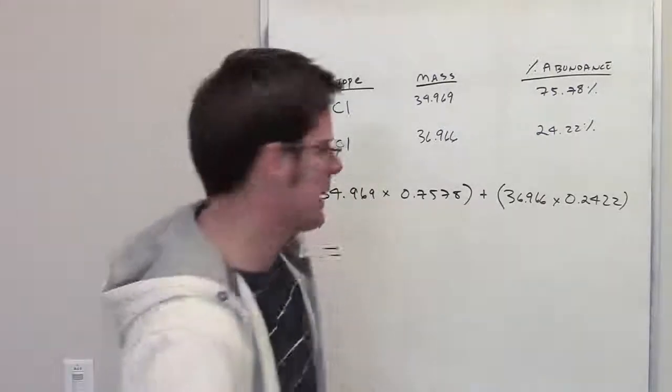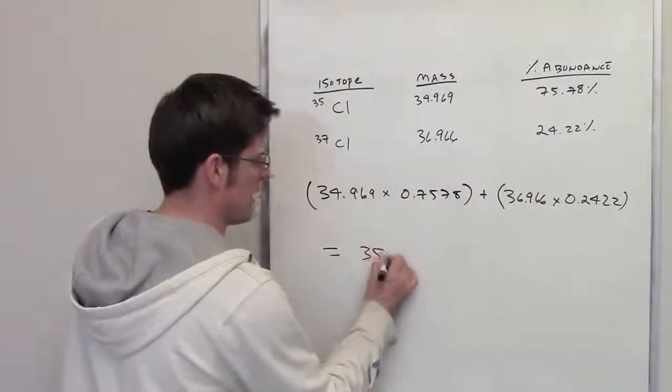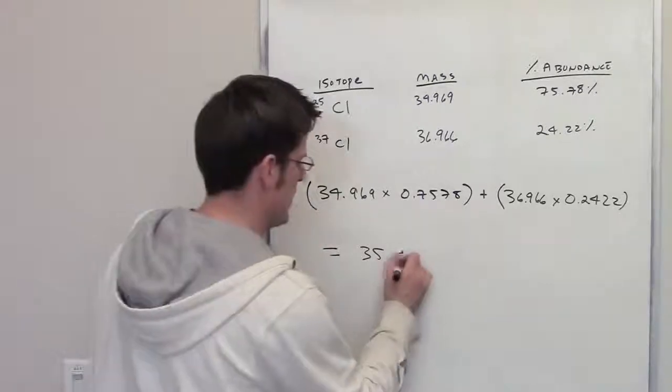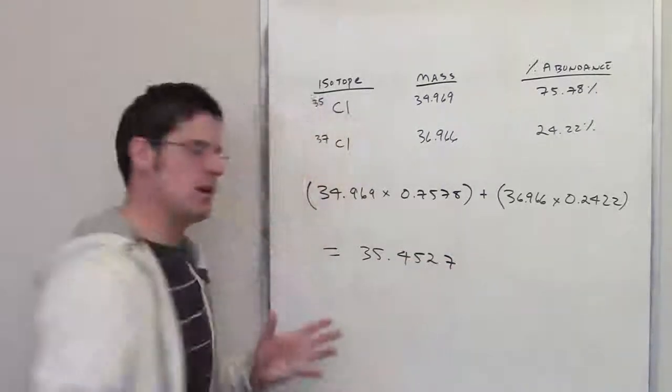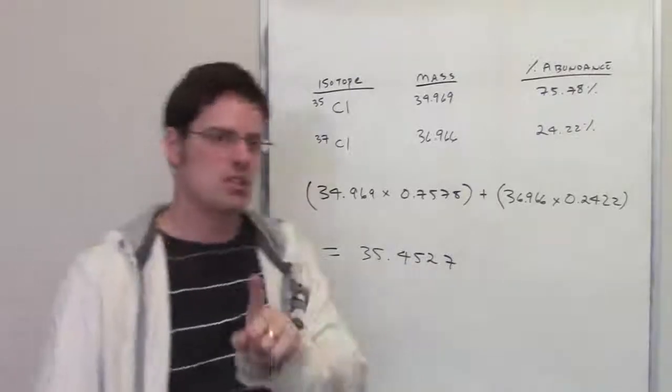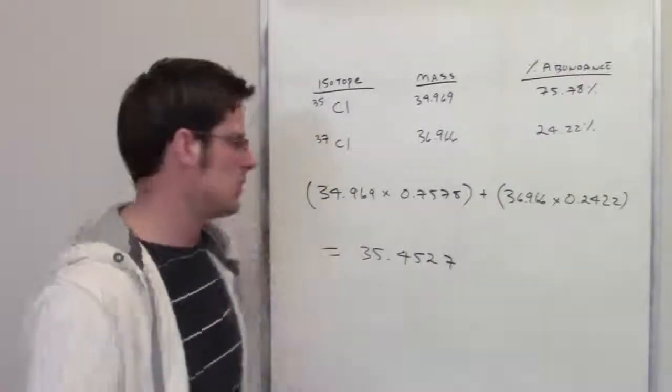Now, I happen to have done that earlier. The number comes out to be 35.4527. If you actually look on the periodic table, this is going to be the number that you'll see in the box for the atomic mass of chlorine.